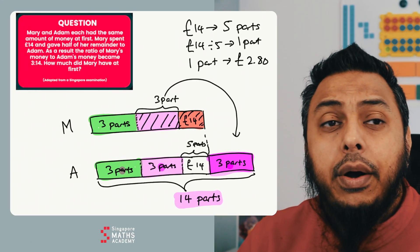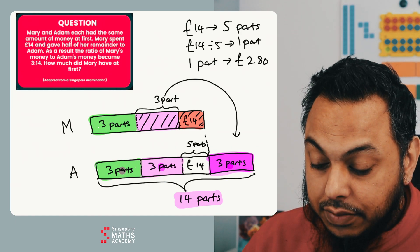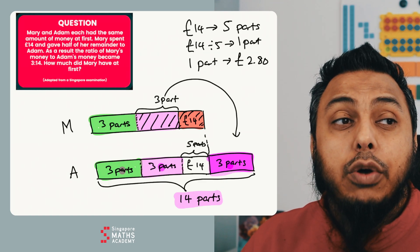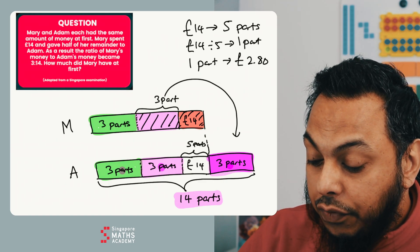The question asks us how much did Mary have at first. Now Mary's bar, we can see she's got three parts, three parts, and £14.